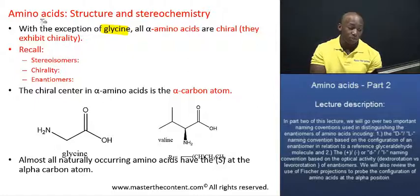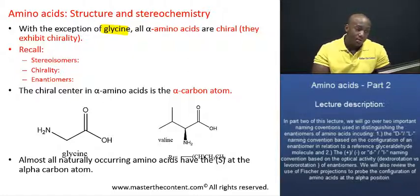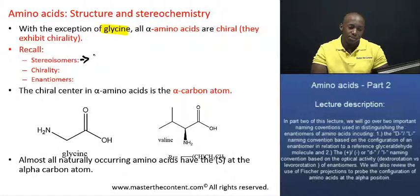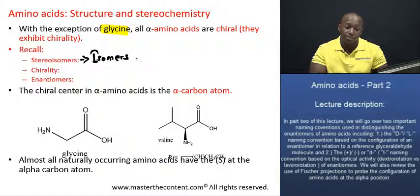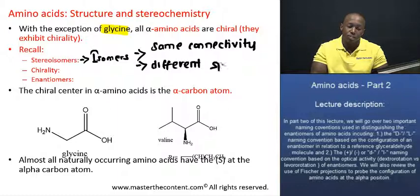You need to know what a stereoisomer is, you need to know what a chiral center is, and you also need to know what an enantiomer is. A stereoisomer is basically a pair of isomers that have the exact same connectivity of atoms, but they have a different spatial arrangement of atoms in three-dimensional space.